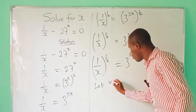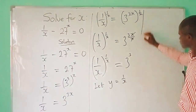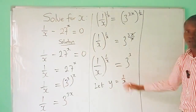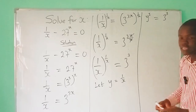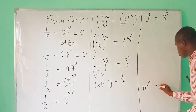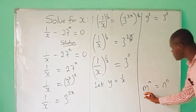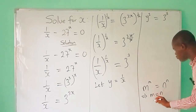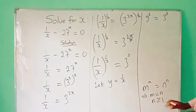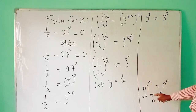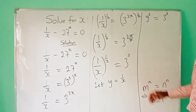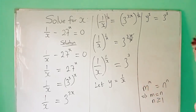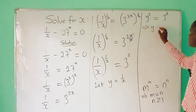We can let y equal to 1 over x. So if y is equal to 1 over x, then we can rewrite this equation as y raised to the power y is equal to 3 raised to the power 3. In indices, when m raised to the power m is equal to n raised to the power n, then it implies that m is equal to n, provided that n is greater than or equal to 1. This rule holds whenever the base and index are the same, and it equals another expression where the base and index are also the same. Applying it to this problem, it means that y is equal to 3.